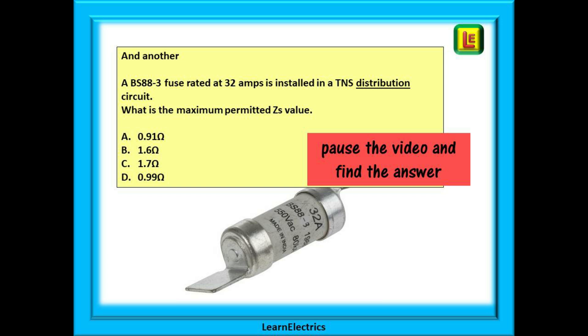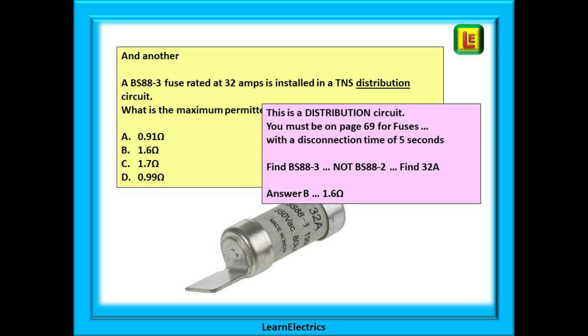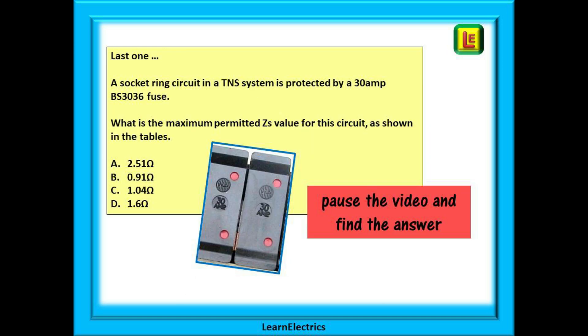Another question now. A BS 88-3 fuse rated at 32 amps is installed in a TNS distribution circuit. What is the maximum permitted ZS value? Again pause the video and attempt the question. This is a distribution circuit and it is a TNS earthing system. You must be on page 69 for fuses table 41.4. Those with a disconnection time of 5 seconds. Find BS 88-3 not BS 88-2. Find 32 amps and there is your answer. Answer B, 1.6 ohms.